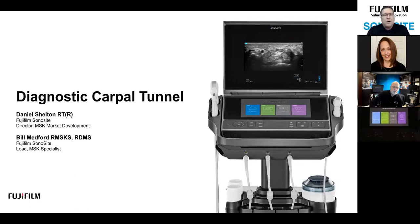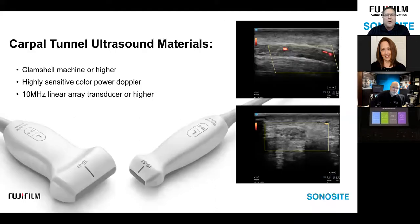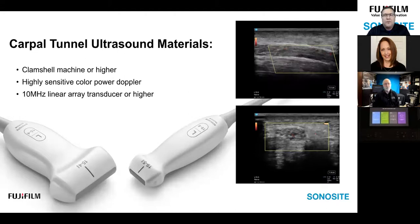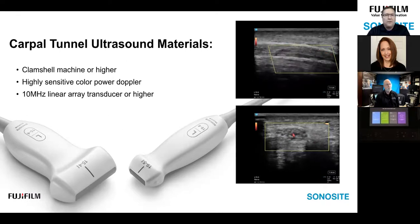Displayed here is the Sonosite PX where all the images for the slide content were taken. Keep in mind that to do a diagnostic-level carpal tunnel exam, it is recommended that you choose a clamshell machine or higher. Things to look out for are color sensitivity and your frequency. Today we'll be scanning at 15 megahertz for the general survey of the carpal tunnel, and you'll see some images at 19 megahertz.